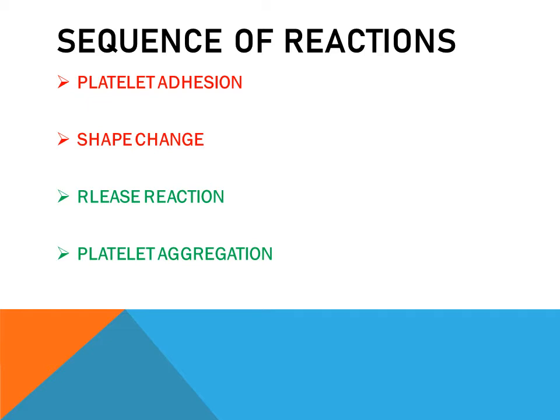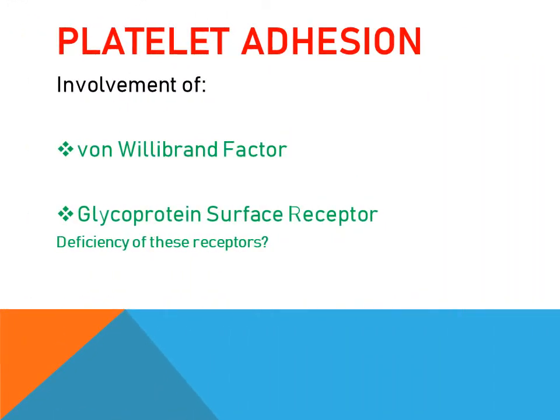Platelet adhesion is mainly mediated by von Willebrand factor. This factor serves as a bridge between the platelet surface receptors — called glycoprotein 1b (GP1b) receptors — and the exposed collagen. The collagen is exposed because of endothelial injury, so von Willebrand factor helps in the attachment of the platelets to the collagen via these GP1b surface receptors.